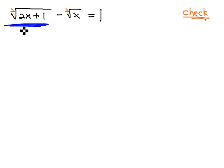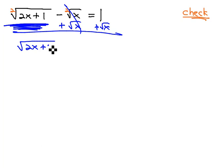In this case, it'll be easy to get the first square root alone simply by adding the square root of x to both sides. This gives us the square root of 2x plus 1 is equal to the square root of x plus 1.